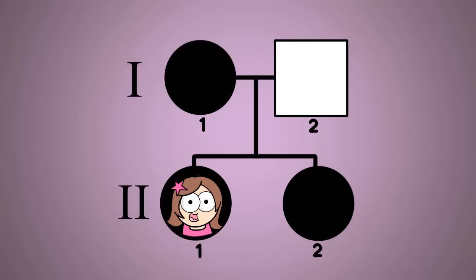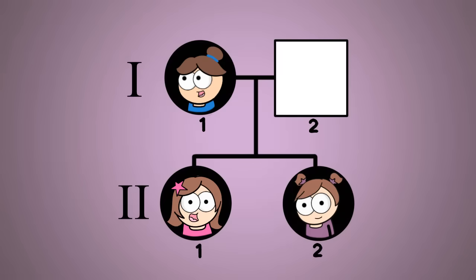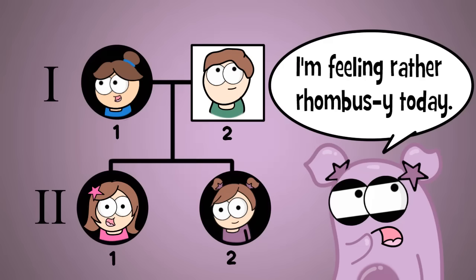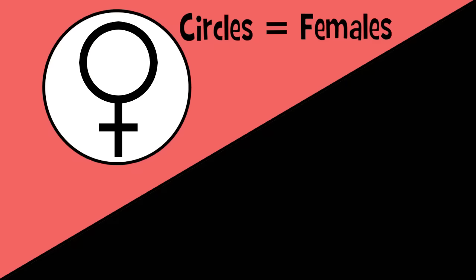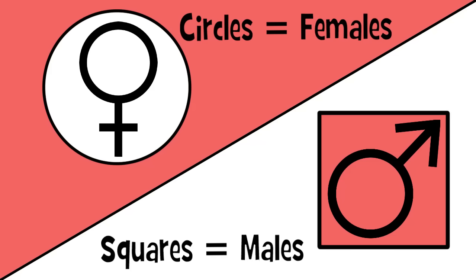That's me, my sister, my mom, my dad. I'm not arbitrarily picking random shapes to represent us either. In a pedigree, the circles represent females. Squares represent males.